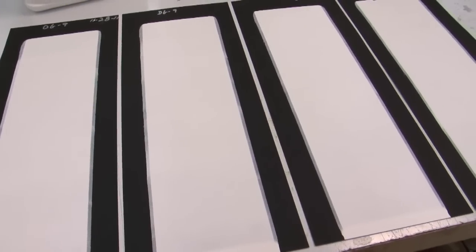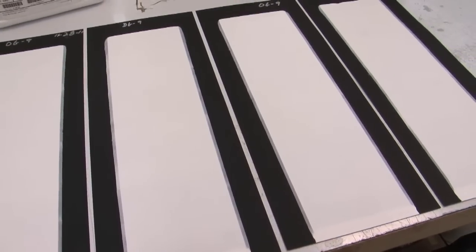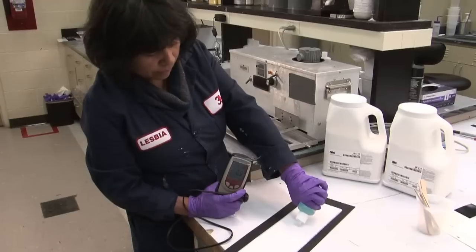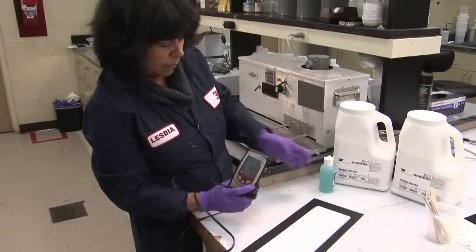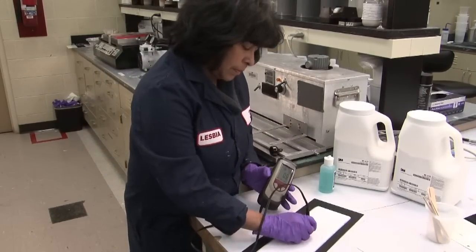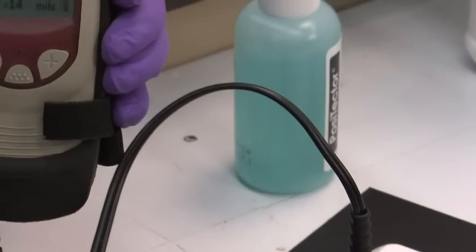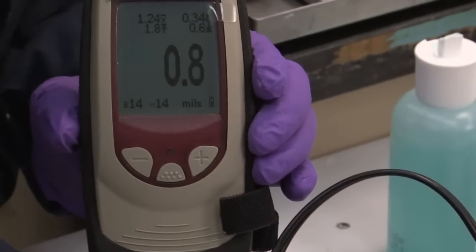Drawdowns for washability, scrub resistance, burnish resistance and gloss are left to dry for seven days. Drying times for other tests vary from several hours to a day. After the panels dry, we measure the thickness of the paint using a non-destructive ultrasound thickness gauge. Now our panel is ready for testing.